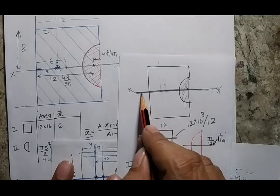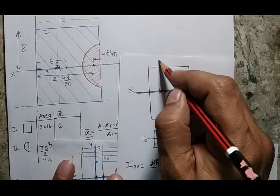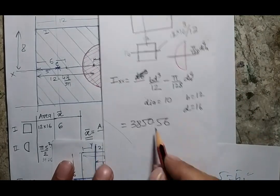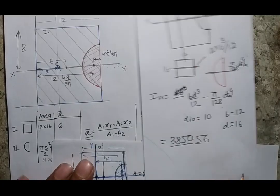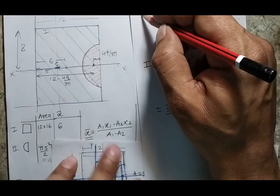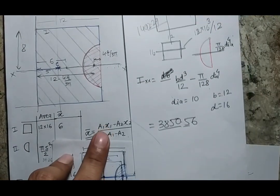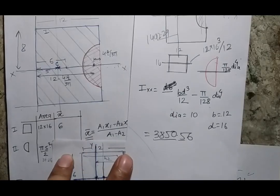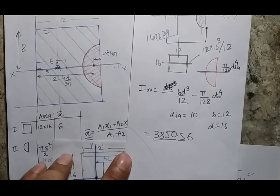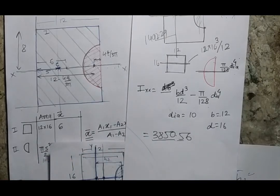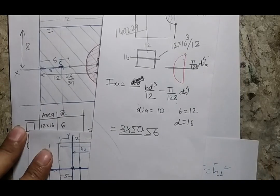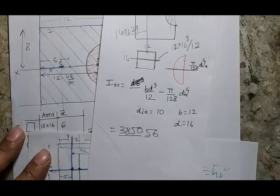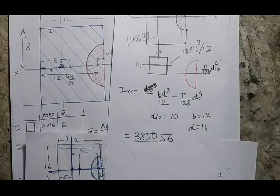The moment of area about the XX centroidal axis is 3850.56, and the previously calculated moment of area about the YY axis was 1492.29. I request all viewers and students to please solve these problems by hand yourself — don't just watch the video. Try step by step, and only then will you be able to solve the problem in examinations.